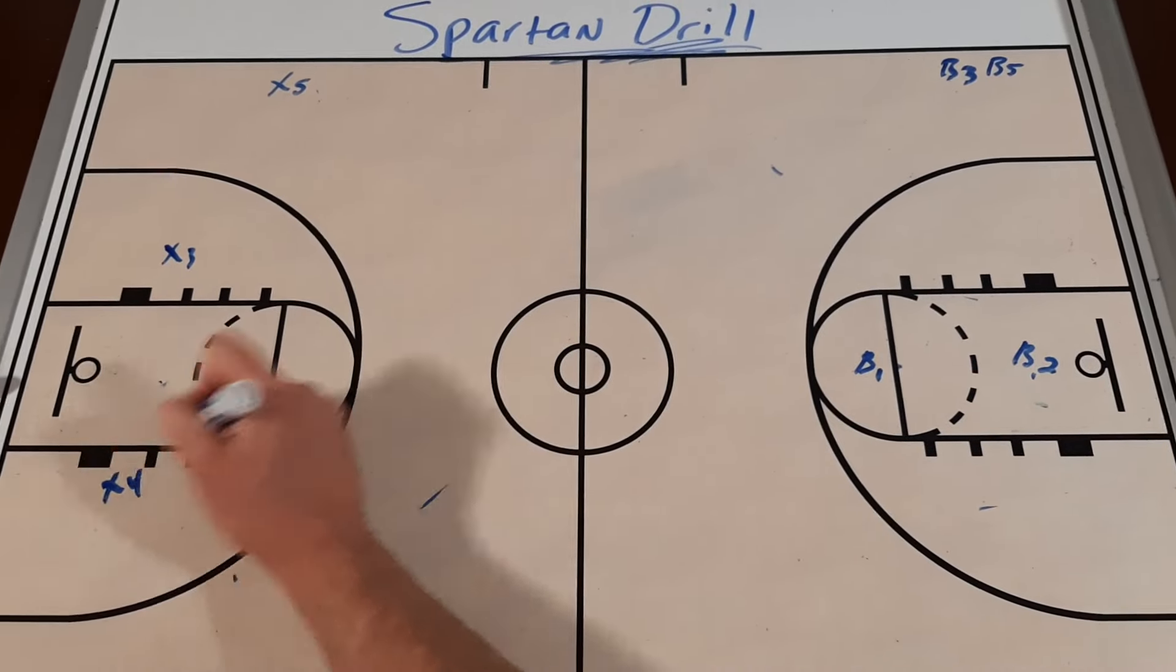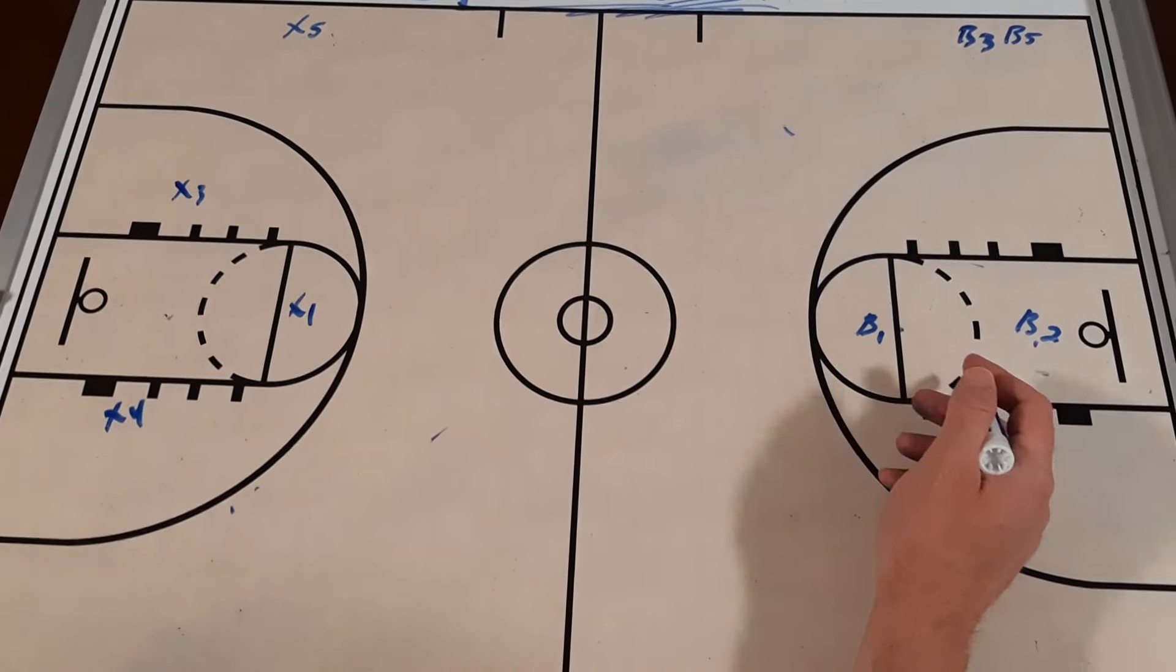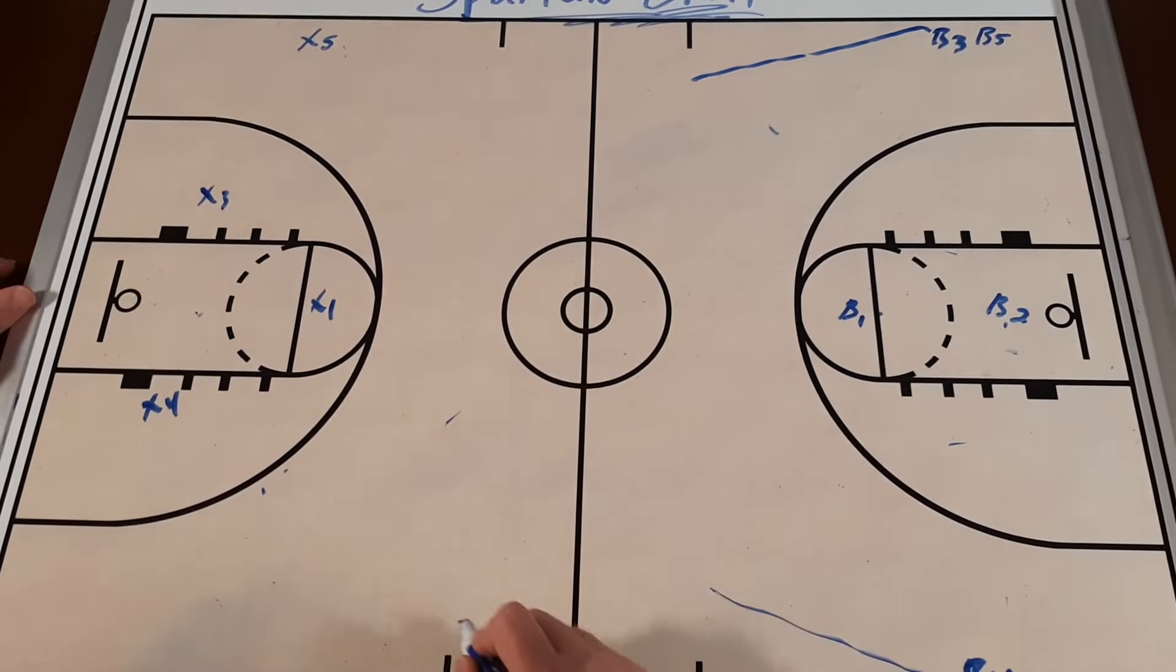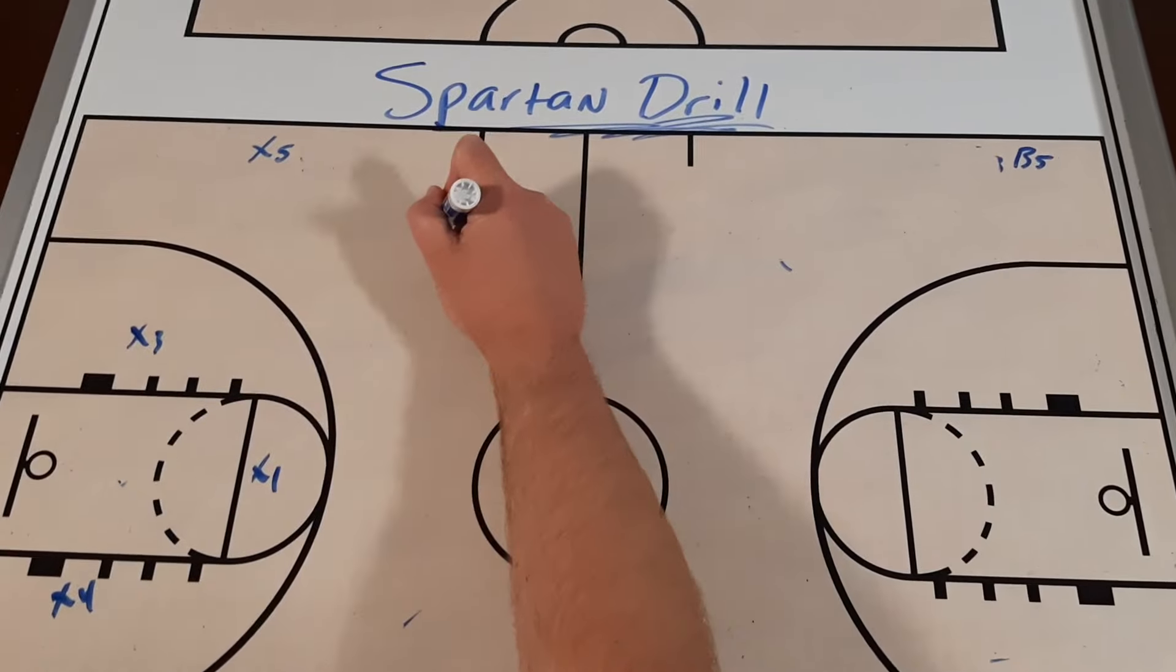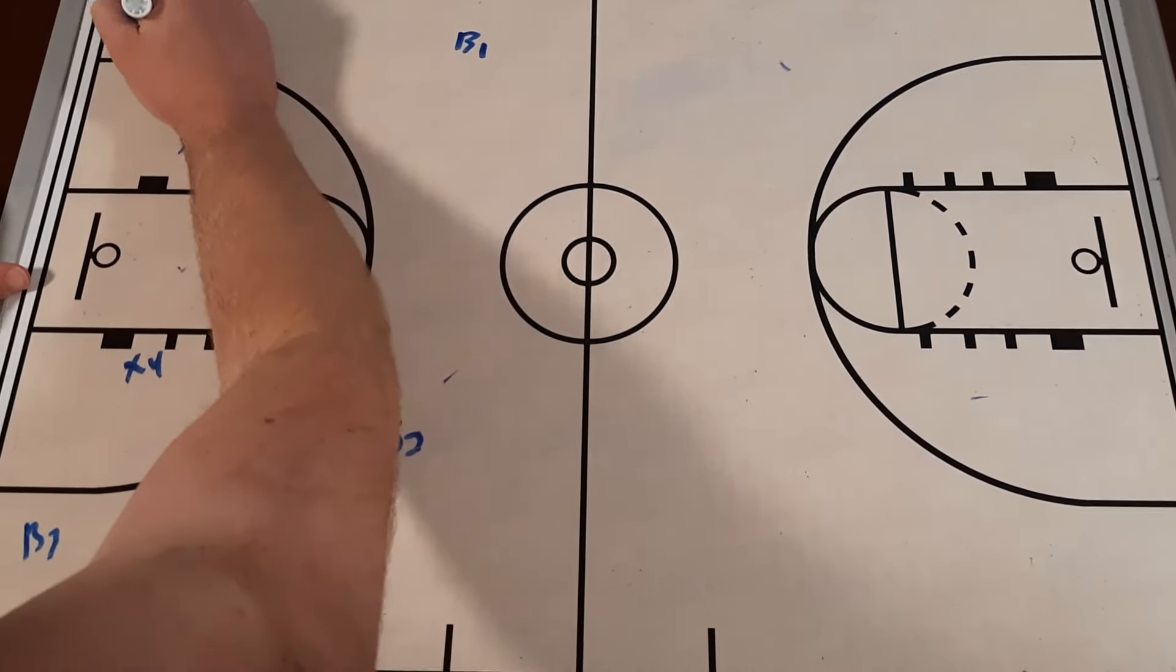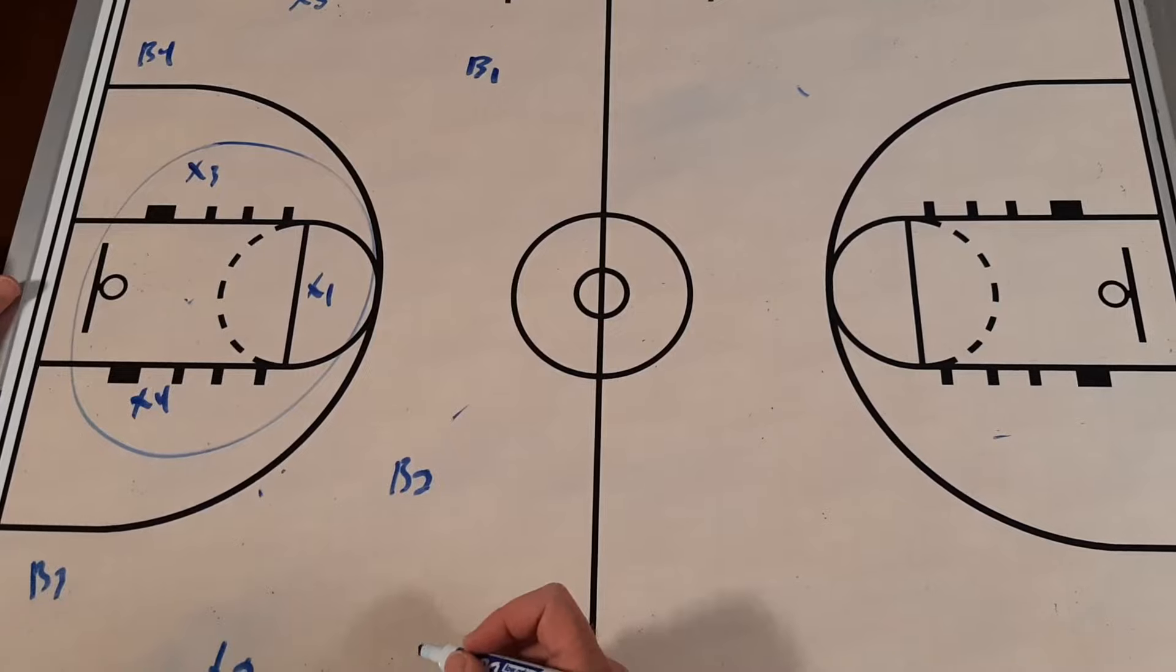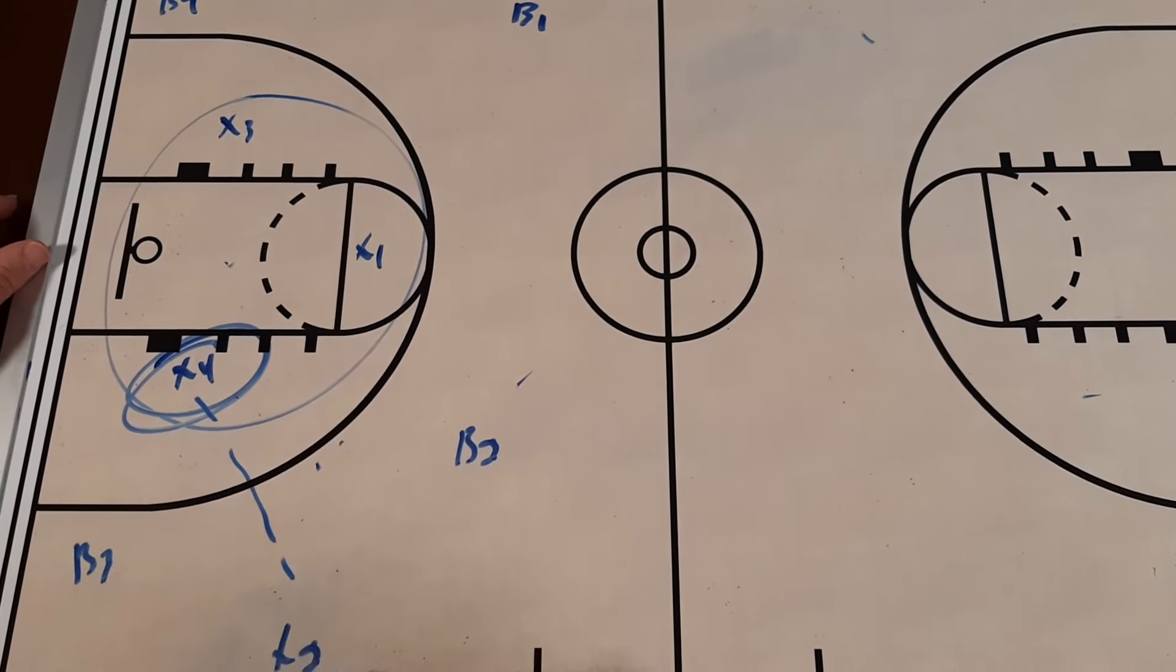When our defenders get the rebound, X4, X3, and X1 are going to work back on defense. B4 and B3 are going to come in on offense. It could be an outlet pass, however it works out. And now it becomes 4 on 3. We have our B1, B2, B3, and our B4 player all out there trying to score against our three defenders in the paint.